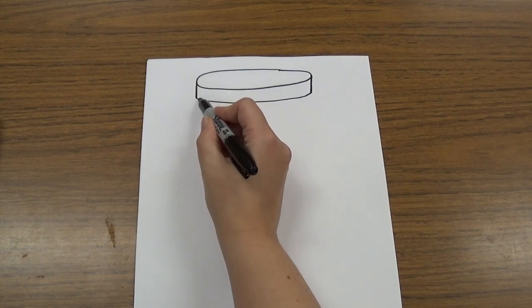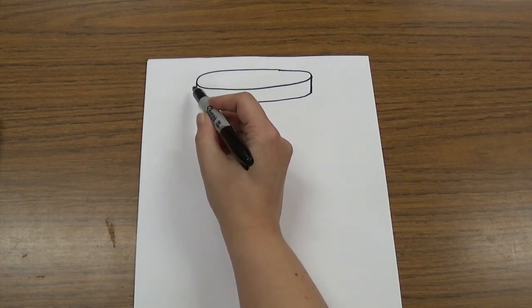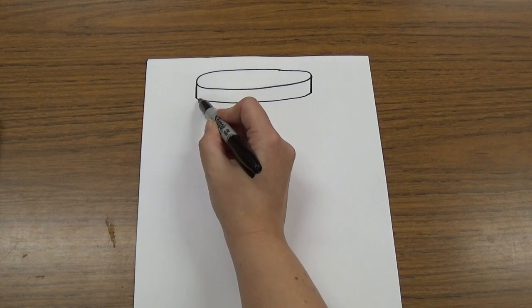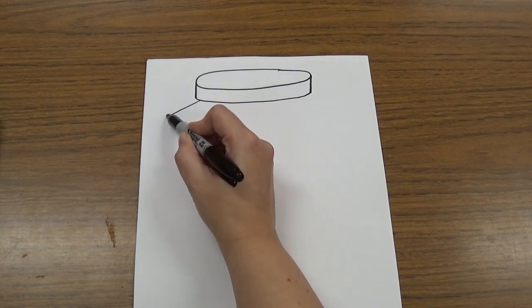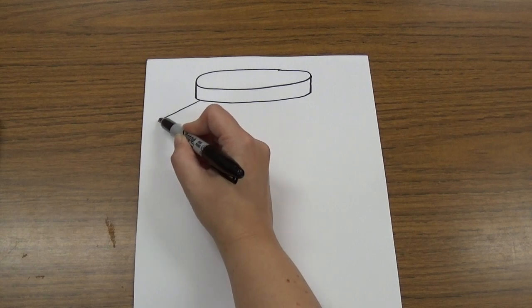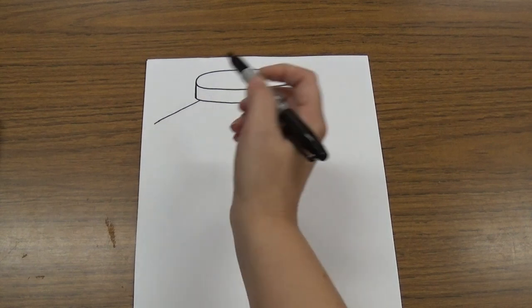Next we're going to start down in this corner where these two lines meet. We're going to draw a line that angles out just a little bit. It almost goes to the side of our paper but doesn't quite touch the side.